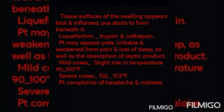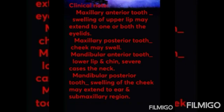Systemic reactions: the patient may appear pale, irritable, and weakened from pain and loss of sleep, as well as absorption of septic products. In milder cases, there is a slight rise in temperature — 99 to 100°F — and in severe cases, 102 to 103°F. The patient has a history of fever combined with chills, and may present with a coated tongue, foul breath, headache, and malaise.